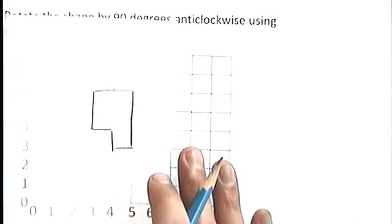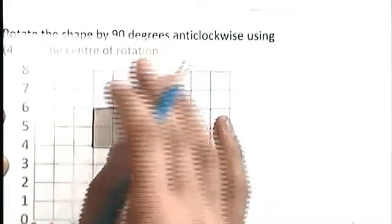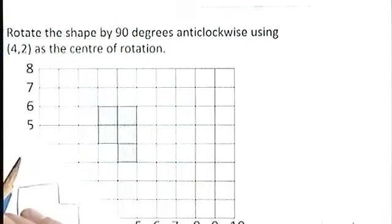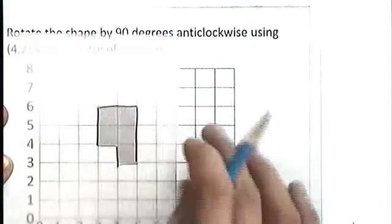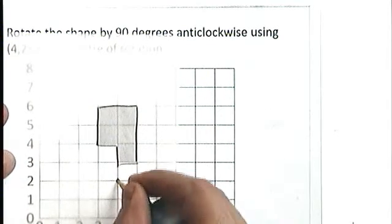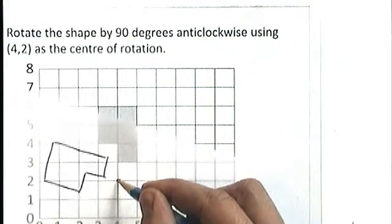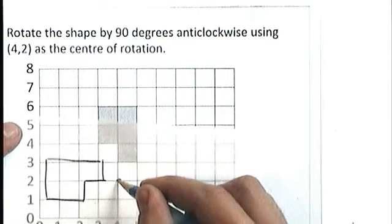And what I was told to do was rotate the shape by 90 degrees anticlockwise using (4,2) as the center of rotation. So I find my (4,2), put a blob there, keep my pencil there. Remember what we said: 90 degrees anticlockwise, 90 degrees in that direction.